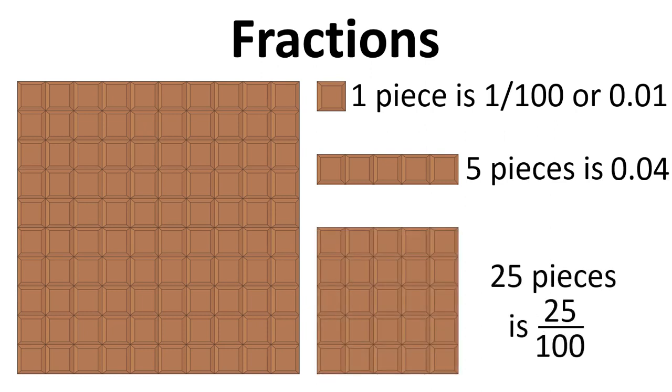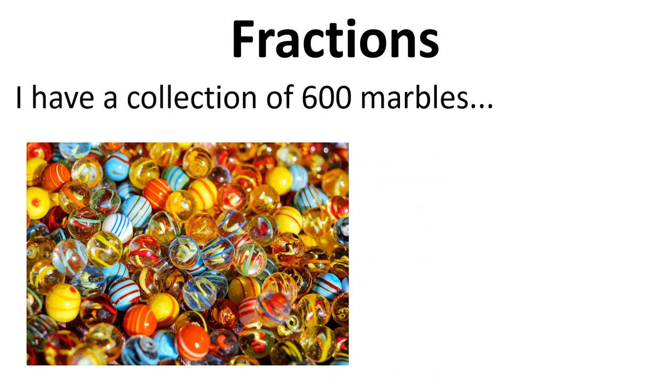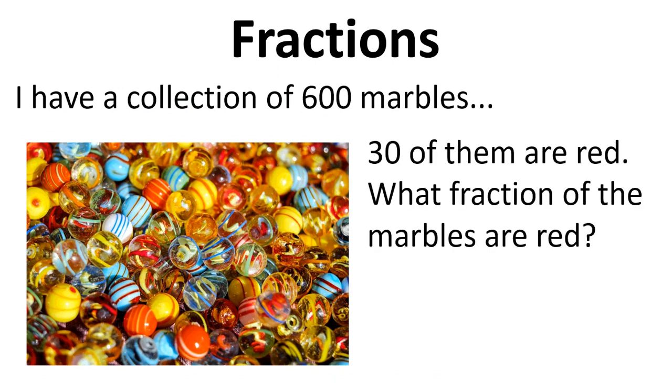Twenty-five pieces, twenty-five over a hundred. That can be simplified to one over four. It can also be written as a decimal, which is 0.25. In terms of the marble example, thirty of them are red. So what fraction of the marbles are red? So it's thirty over six hundred. That can be simplified to one over twenty.